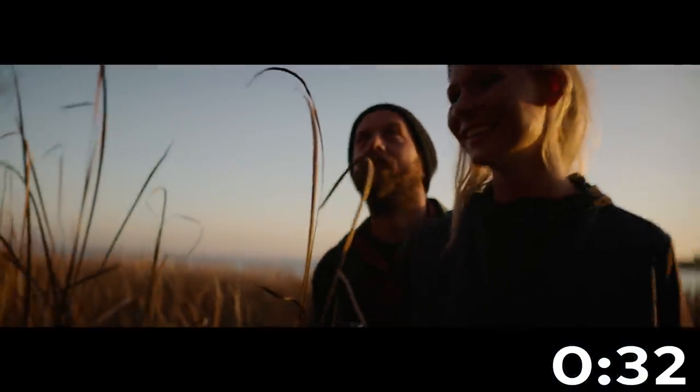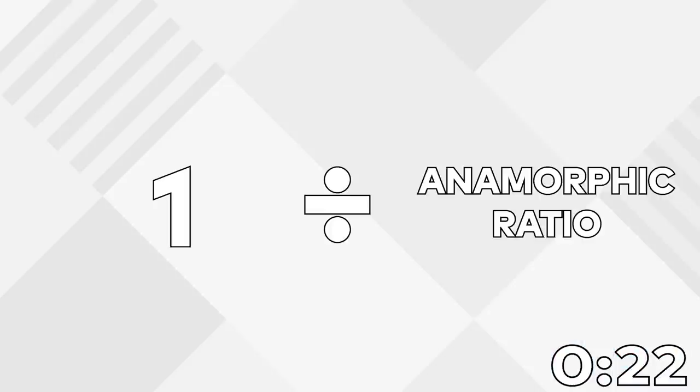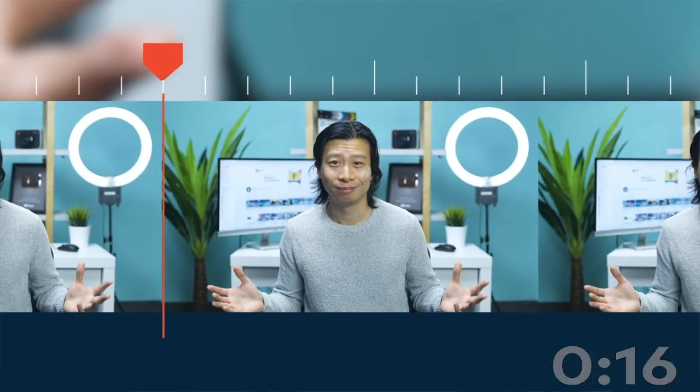For anamorphic lenses that use different ratios, we need to do some math. To figure out how much you need to scale the footage by, you can use the formula 1 divided by the anamorphic ratio, such as 2, 1.5, 1.33, and so on.